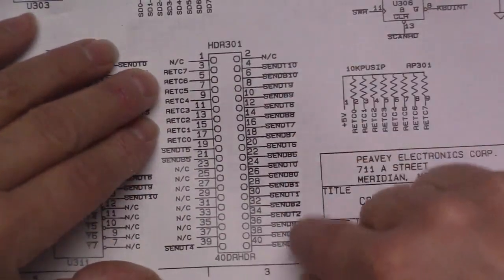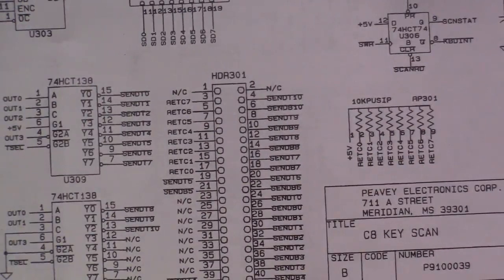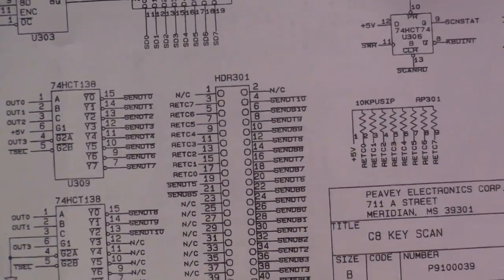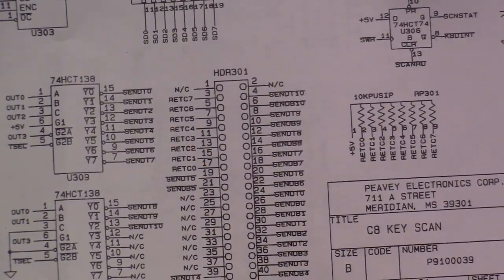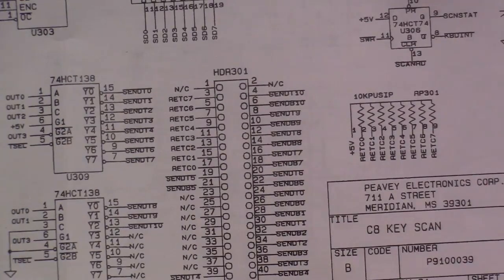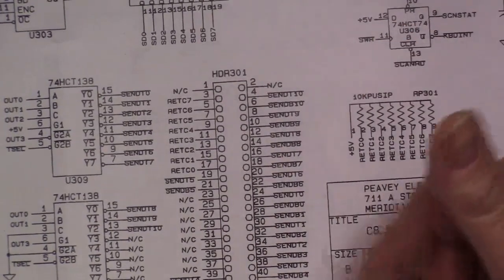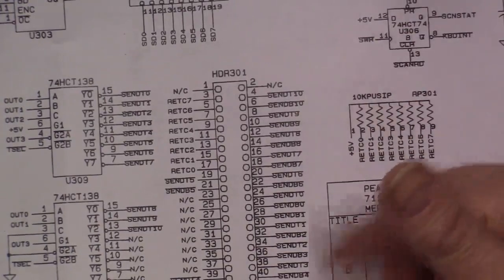But then you need to somehow generate the 20 send signals. With four bits you can make a 16 pattern, and five bits would be 32. So you need five bits and a mux or demux to set all these individually.